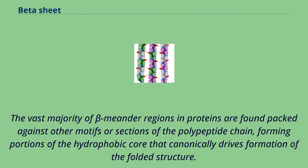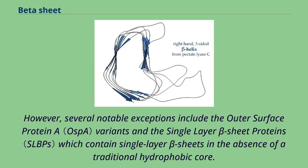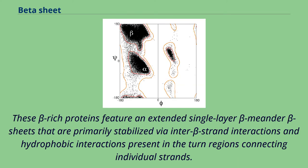The vast majority of beta-meander regions in proteins are found packed against other motifs or sections of the polypeptide chain, forming portions of the hydrophobic core that canonically drives formation of the folded structure. However, several notable exceptions include the outer surface protein A variants and the single-layer beta sheet proteins which contain single-layer beta sheets in the absence of a traditional hydrophobic core. These beta-rich proteins feature an extended single-layer beta-meander beta sheets that are primarily stabilized via inter-beta strand interactions and hydrophobic interactions present in the turn regions connecting individual strands.